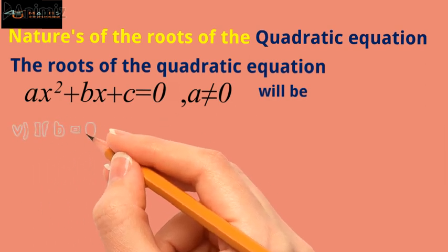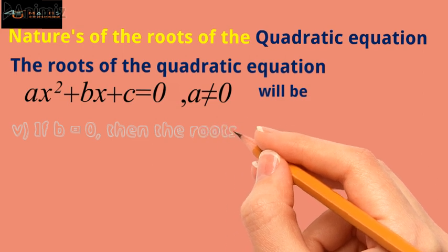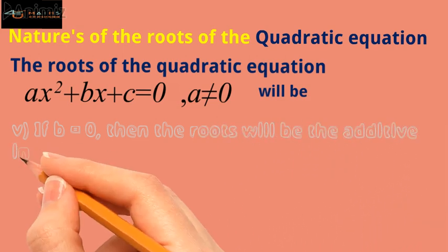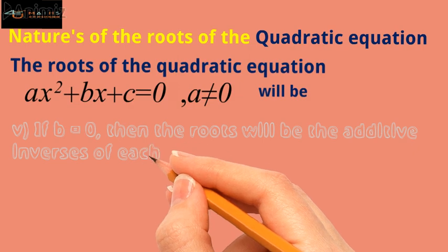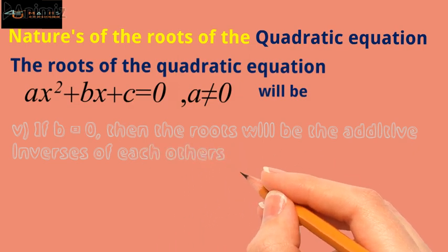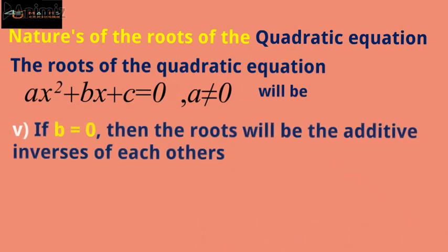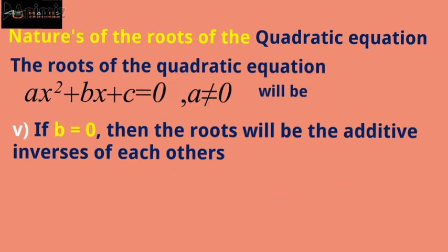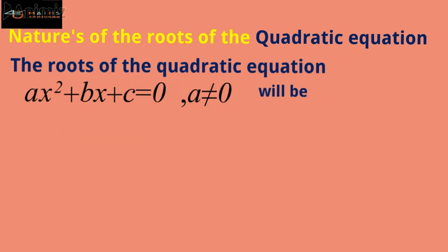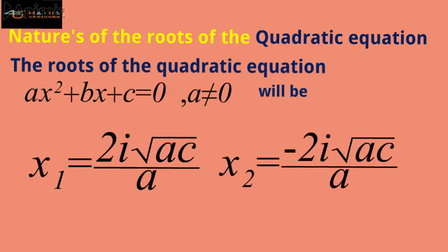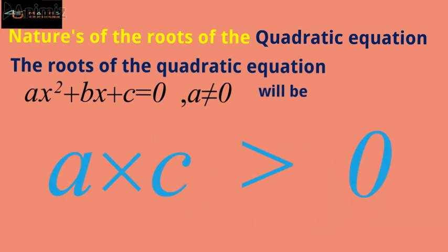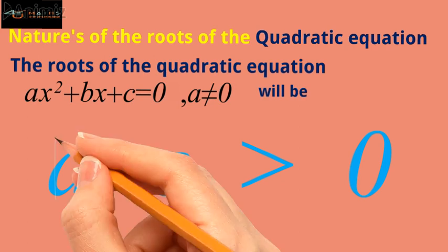Case five — if b is equal to 0, then the roots will be the additive inverses of each other. Further, the roots will be pure imaginary if the product of a and c is positive.